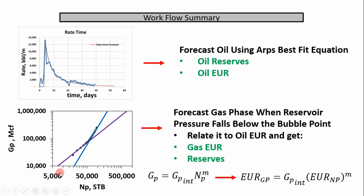The next plot is cumulative gas production versus cumulative oil production. I've covered this in a previous video. Essentially we're fitting a straight line to the late-time data, which represents data beyond our bubble point, and we use it to forecast our gas EUR as a function of our oil EUR. This blue line is represented by a power function where M is our slope, MP is our cumulative oil production, and GP is our intercept on the log-log plot. We can substitute in the oil EUR to get the gas EUR — pretty simple.